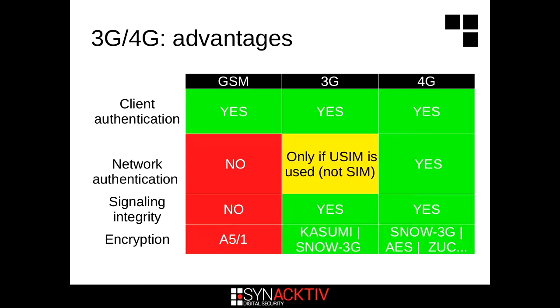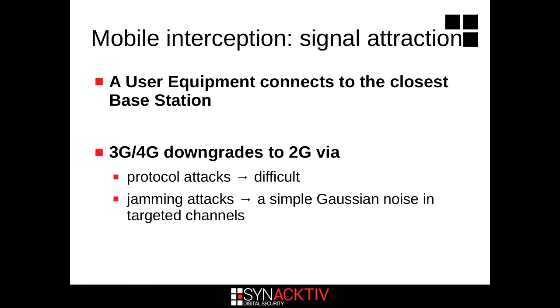To overcome this, 3G and 4G are more secure because they use mutual authentication, signal integrity, and better encryption. So if I'm running a rogue base station and the intercom is using 3G or 4G, I'm in trouble because the mobile phone will attempt mutual authentication and detect that my rogue base station is not legitimate. But to overcome this problem, we can use downgrade attacks.